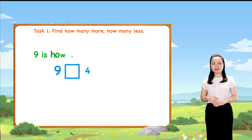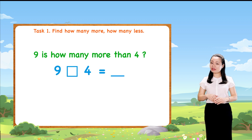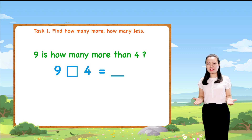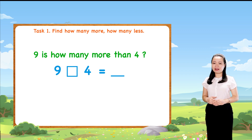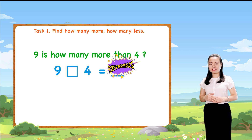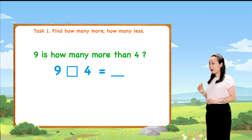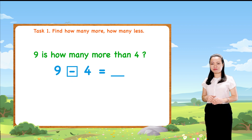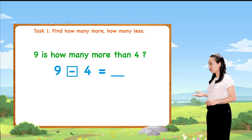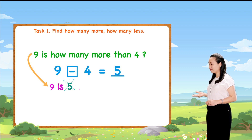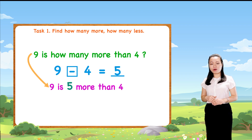How many more? To find how many more, we find the difference between the two numbers. Here we have 9 minus 4 equals 5. So 9 is 5 more than 4.